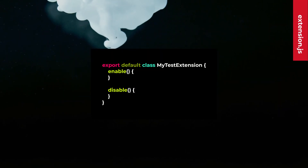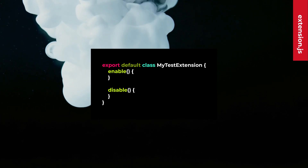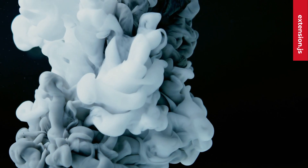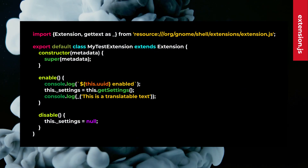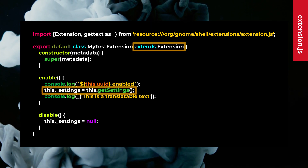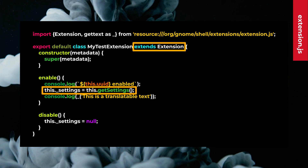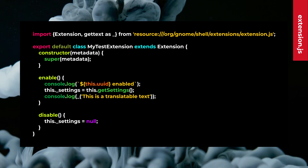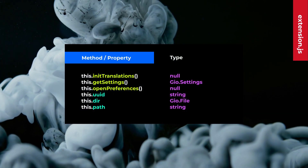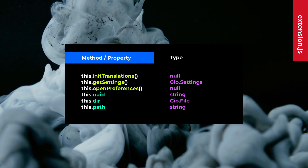Extension.js must have an export default class with enable and disable methods. extensionUtils no longer has the helper functions you usually use in your extension. Instead, you can use extension and extension-based properties and methods. The properties and methods you can use in your extension default class cover all the helper functions you had on extensionUtils.